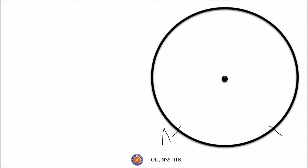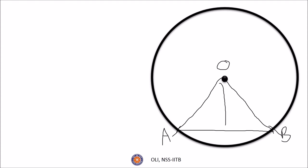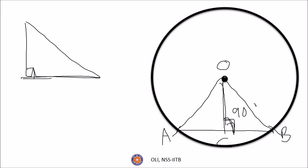We have a chord A B, center is O. Then we have two equal parts. We draw a perpendicular — perpendicular meets at C. So angle OCB is 90 degrees. We have a triangle. This is 90 degrees — a right angle triangle.